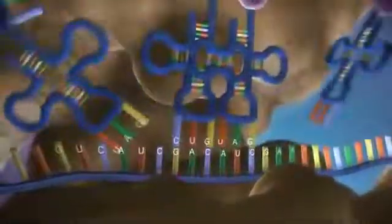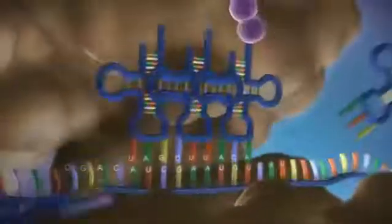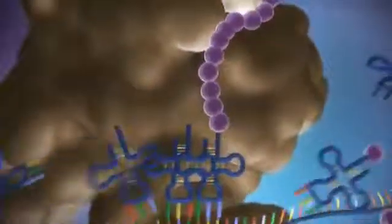The messenger RNA is read three bases at a time. As each triplet is read, a transfer RNA delivers the corresponding amino acid. This is added to a growing chain of amino acids.